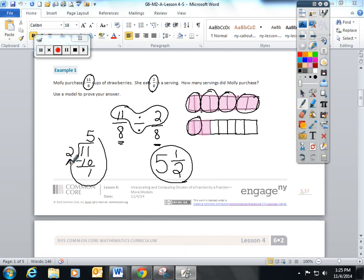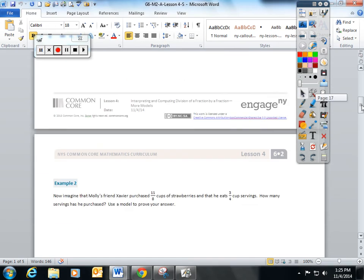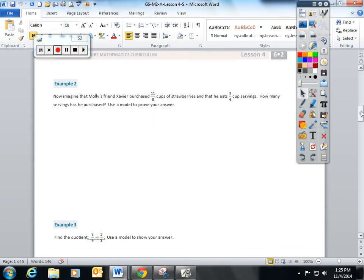So, this lesson goes and makes that theory a little bit trickier. Now, imagine that Molly's friend, Xavier, purchased 11 eighths cups of strawberries and that he eats 3 fourths cup servings. How many servings has he purchased? Use a model to prove your answer. So there's 11 eighths cup. He eats 3 fourths of a cup serving.